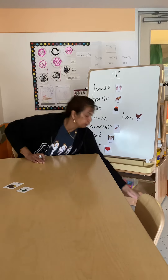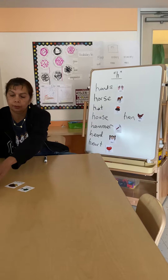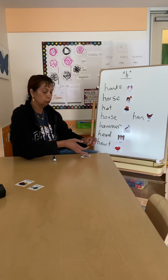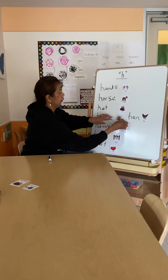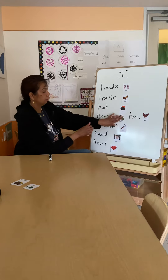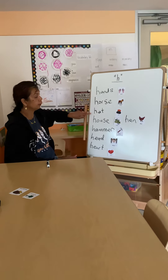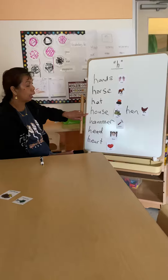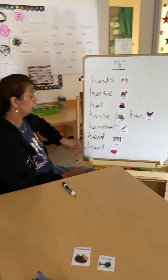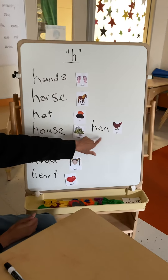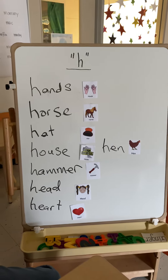I think one of the pictures fell, so I'm going to get some tape so you all can see all the words that start with the letter H. There is my house. So we have the words with the letter H: hand, horse, hat, house, hammer, head, and heart. They all start with the letter H. Thank you, bye!